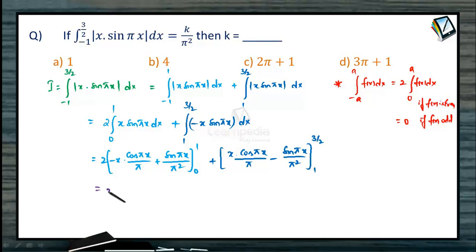So how much is the value coming now? From the first it is 2 times 1 by pi plus 1 by pi square plus 1 by pi which is 3 by pi, 2 by pi plus 1 by pi, 3 by pi plus 1 by pi square which when we express with denominator pi square this is 3 pi plus 1 by pi square.